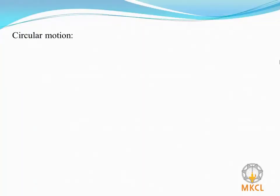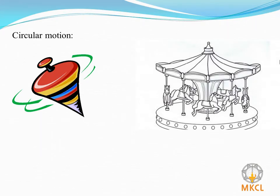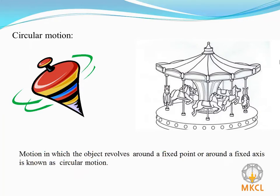The motion of a spinning top or motion of a merry-go-round is similar to the motion of the blades of a fan. Motion in which the object revolves around a fixed point or around a fixed axis is known as a circular motion.